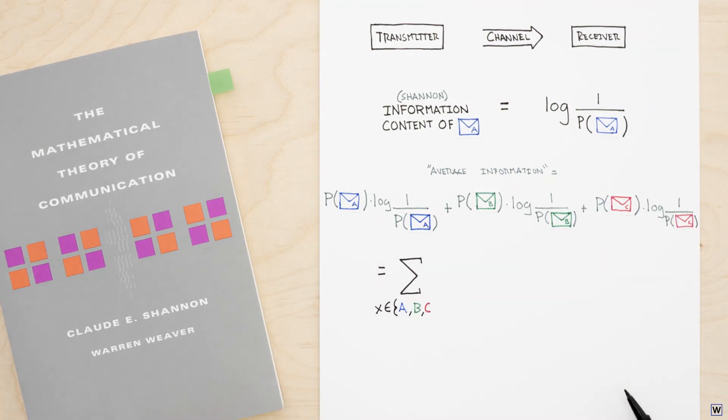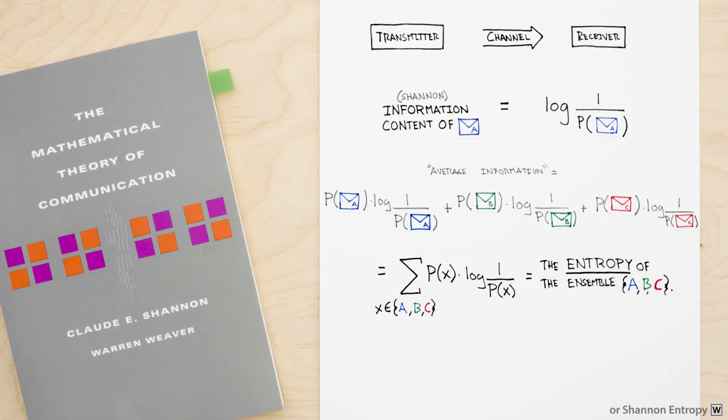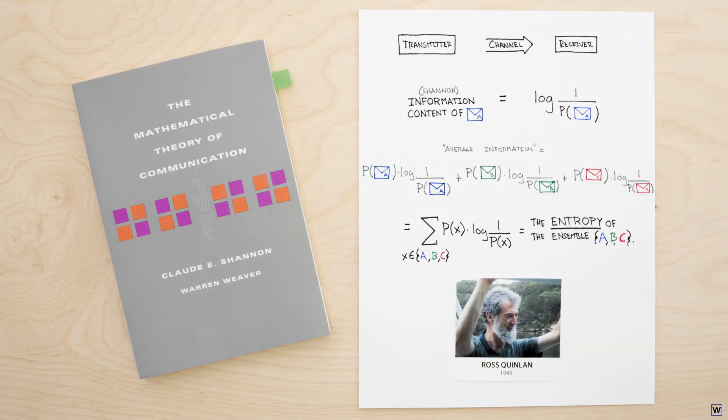The result, the average information content gets a special name, entropy. So what could all this possibly have to do with node impurity when choosing the best split in decision trees? Why did Ross Quinlan choose to borrow from information theory? Well, for one, despite Shannon's warning, information theory has been successfully applied across many fields that have nothing to do with communications. And secondly, we can make a reasonable argument that measuring the information gained by a possible split is a natural way to build decision trees.